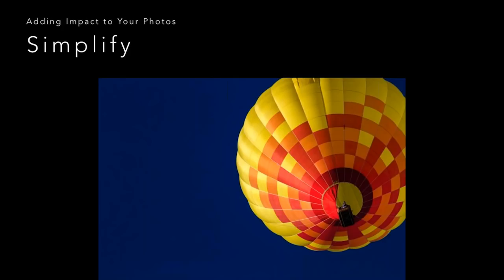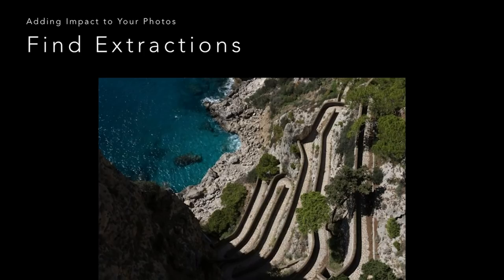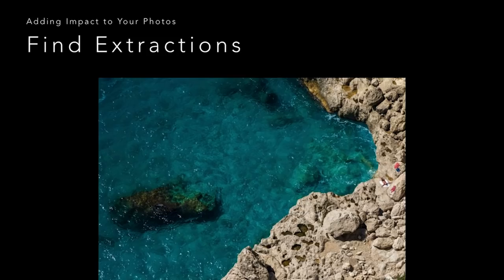The idea is to look for other compositions within the scene. I refer to this as extraction — extracting something out of a larger scene. With this photo from a high vantage point on the island of Capri in Italy, looking down on Via Krupp toward Marina Piccola, the viewpoint gives a sense of how high up you are. But there's a lot going on. So taking a look at the scene and figuring out: is there something I can extract? One little area of that shoreline with beautiful turquoise water, rocks, and the interesting shape of the shoreline — just zooming in and finding something else.